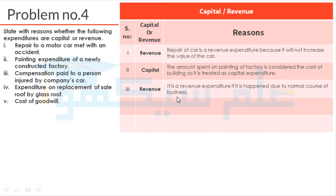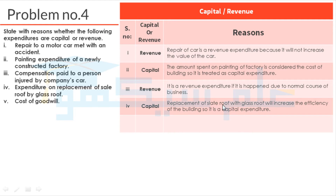This accident compensation is a revenue expenditure. Next, Expenditure on Replacement of Slate Roof by Glass Roof: the roof change will increase the efficiency of the building, so replacing the slate roof with a glass roof is a capital expenditure.